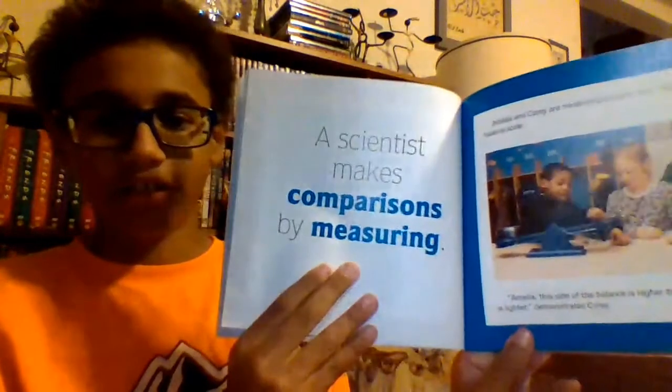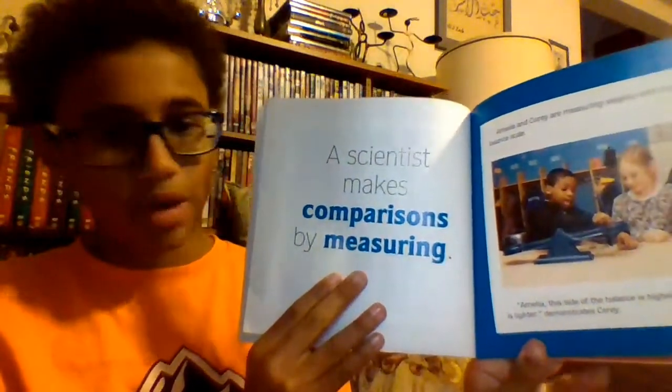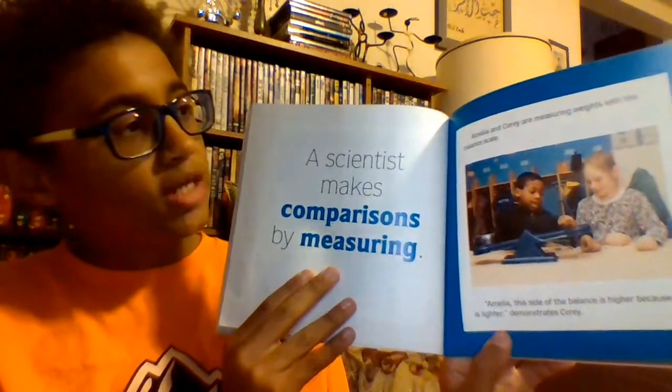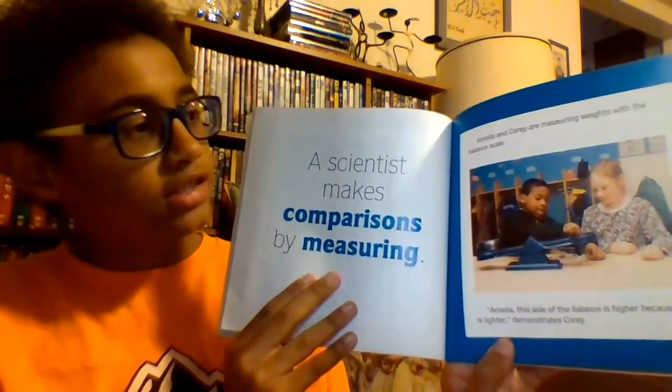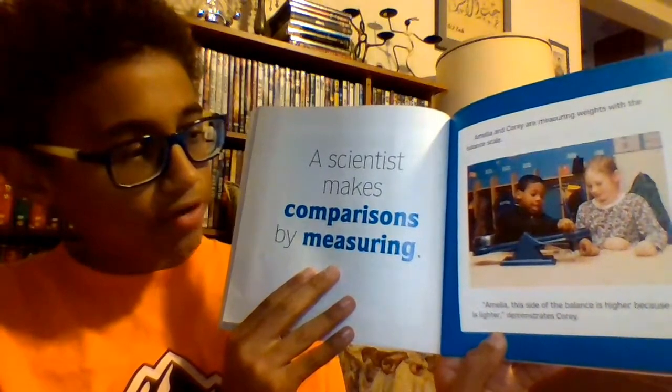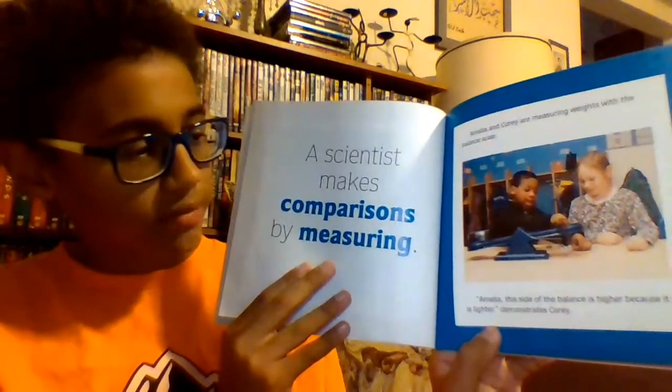A scientist makes comparisons by measuring. Amelia and Corey are measuring weights with the balance scale. 'Amelia, this side of the balance is higher because it is lighter,' demonstrates Corey.